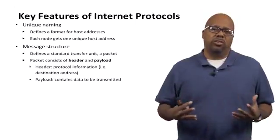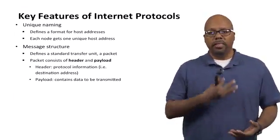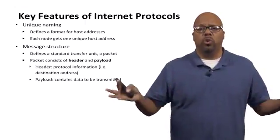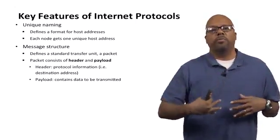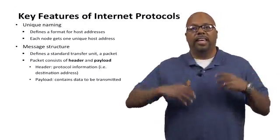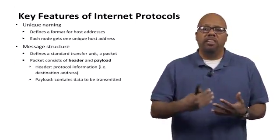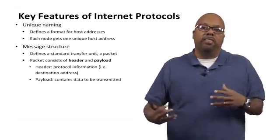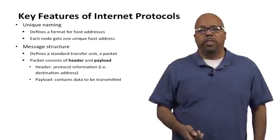If you look at any one of these messages that goes across the Internet, you can generically — no matter what protocol you're talking about — cut it up into a header and a payload. The header has protocol-related information, while the payload is the actual data that you want to send. Say I want to send the words 'hello world' to somebody — that's the payload. But before that, you have to put some header information: the destination address, the MIME type, the size of the message. There's a lot of data you put in the header that's required by the protocol to get the message where it's going to go efficiently.